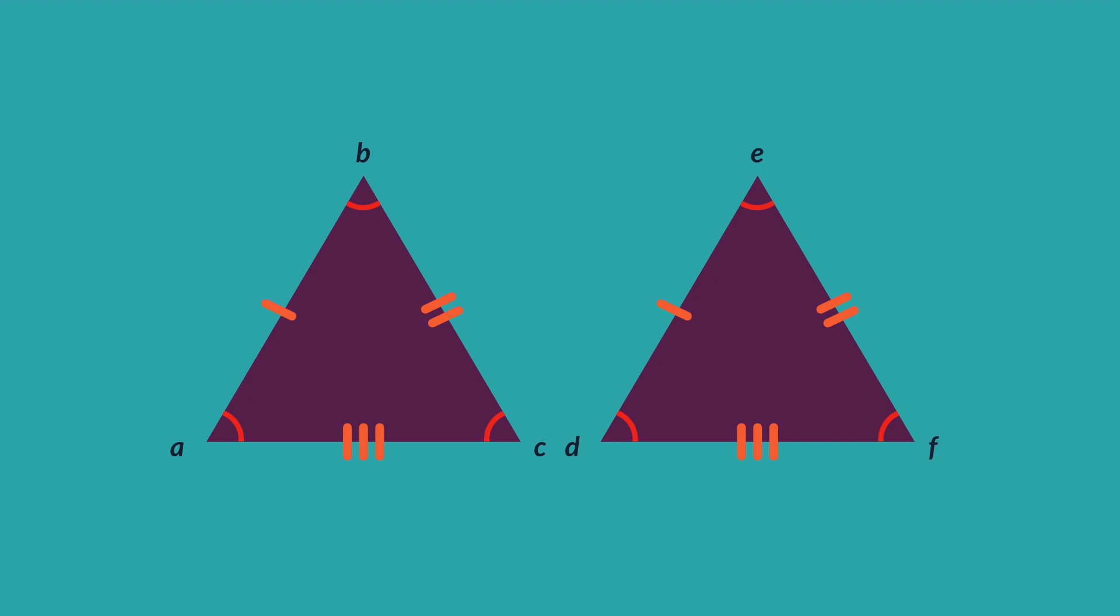If we can prove that two triangles are congruent, then we know that everything about them is the same, and this can help us to find any unknown sides or angles.